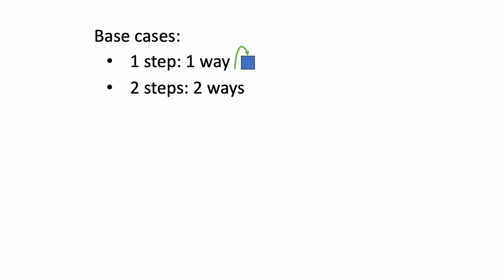We also need to define the base cases. If a staircase only contains one step, then there is only one way to climb it, which is to take one step. If a staircase contains two steps, then there are two ways to climb it — you could take one step then another step, or you could just take two steps at once.